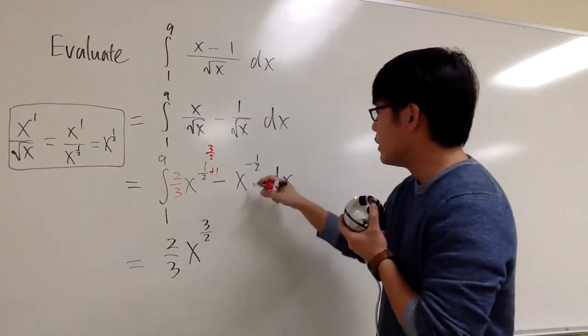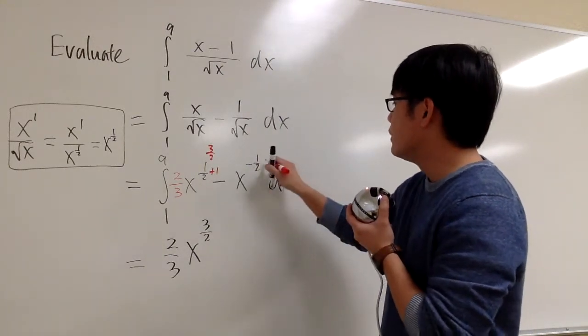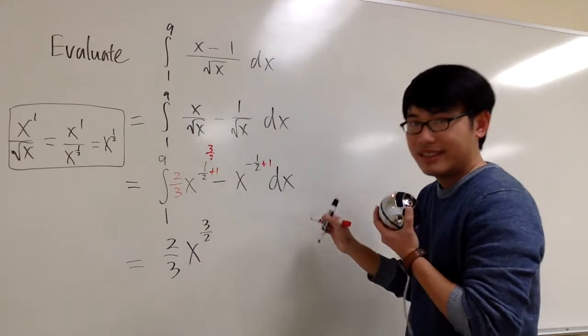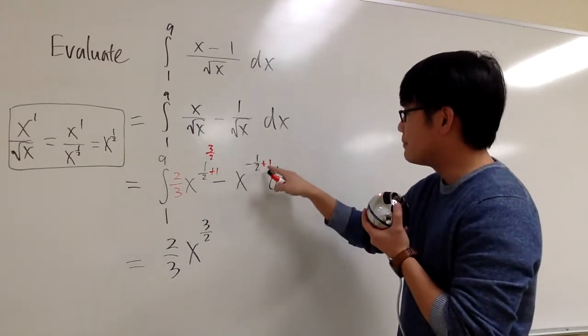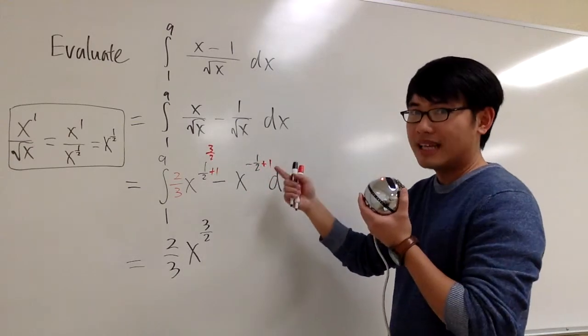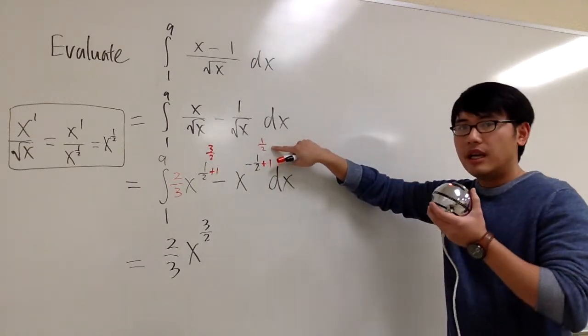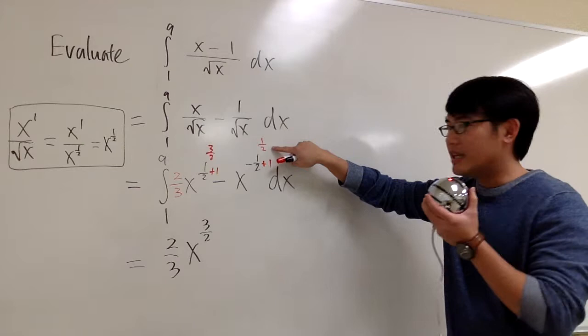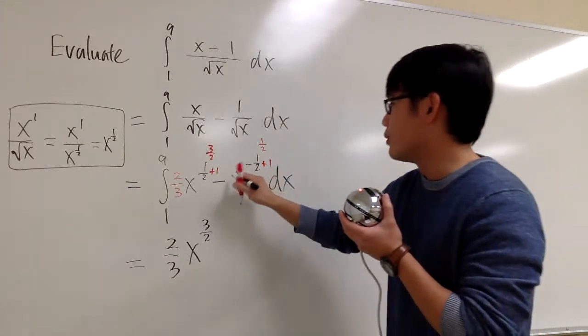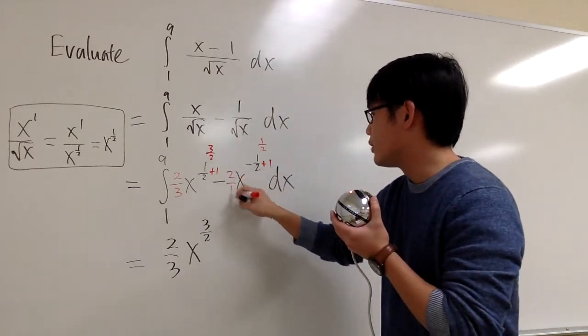And now for the second term, we have x to the negative one-half. We still add one to the exponent. Negative one-half plus one, it's going to be positive one-half. This is positive one-half. And divided by one-half, it's the same as multiplied by two.